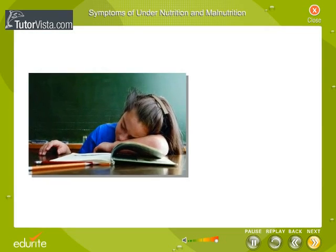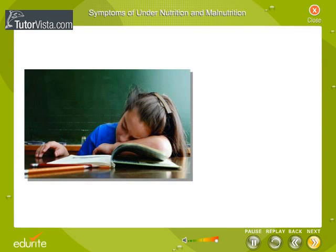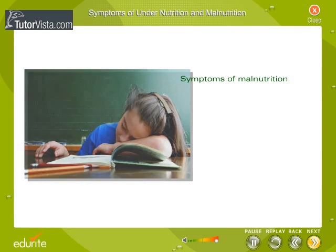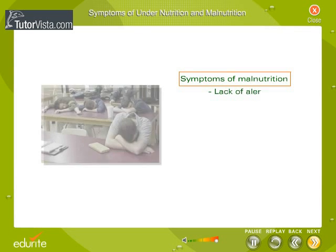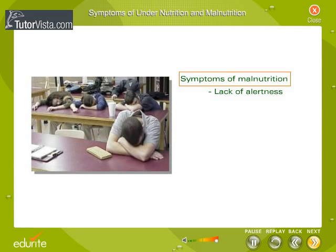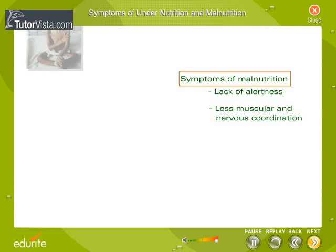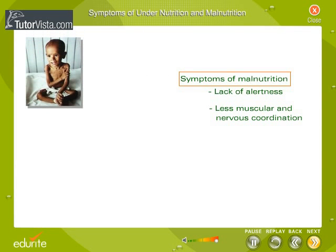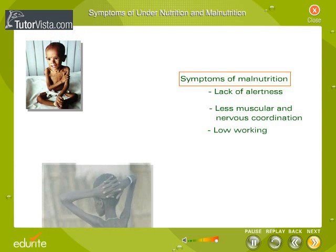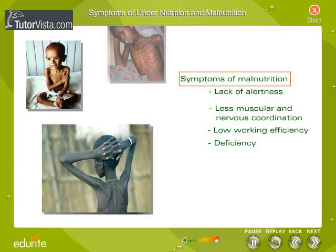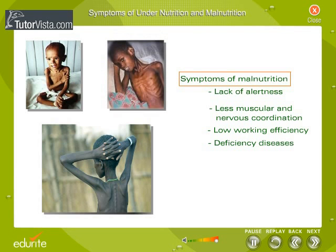Malnutrition can also lead to retardation and reduced mental alertness. This may be due to lack of concentration, physical weakness, or poor muscular and nervous coordination. Prolonged malnutrition will lead to deficiency diseases and irreparable damage, both physically and mentally.